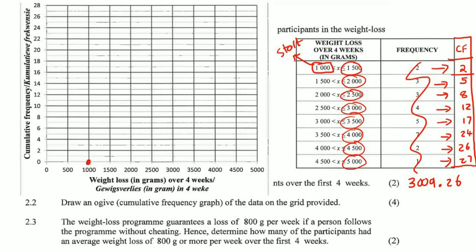Second important point: for an ogive, you use the upper class boundary values, not the midpoints. You also start at the lower boundary of the first class. So place a dot at 1000 to start, then at 1500 with y=2, at 2000 with y=5, at 2500 with y=8, at 3000 with y=12, at 3500 with y=17, at 4000 with y=24, at 4500 with y=26, and at 5000 with y=27. Draw a smooth S-shaped curve through all points.